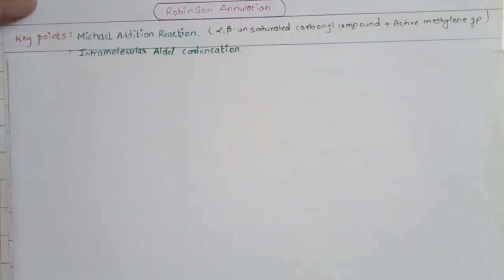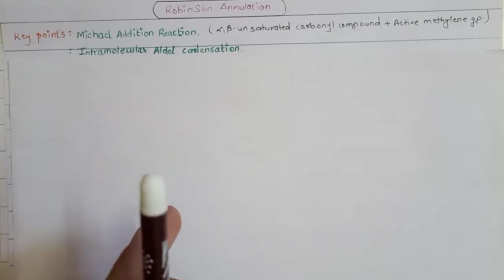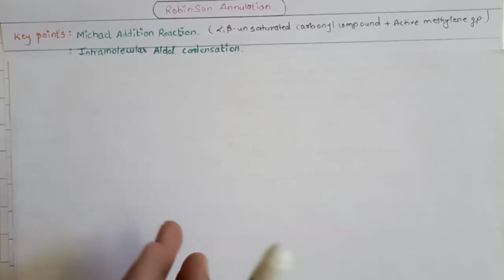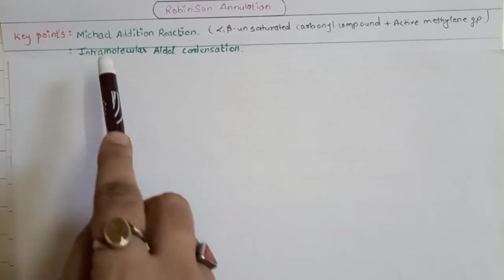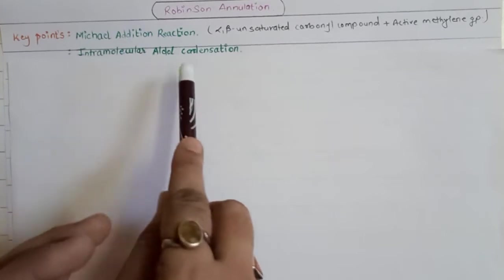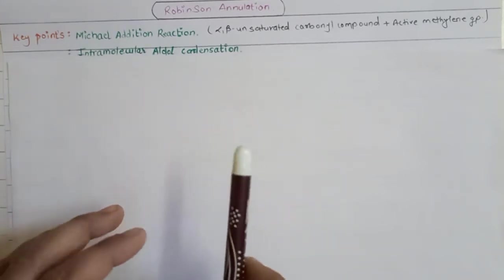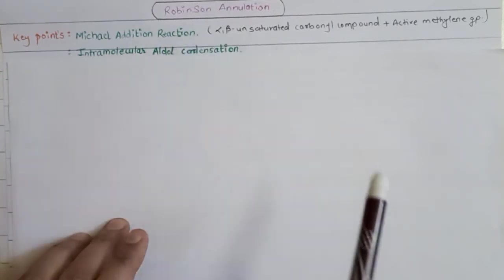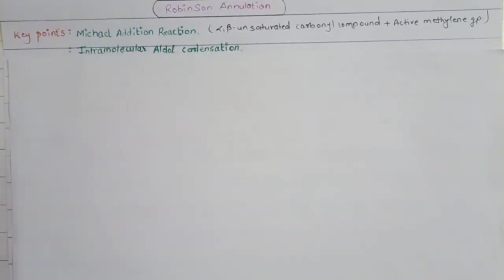When we study the Robinson annulation chemical reaction, we will study two chemical reactions - that is the major key point. To solve and understand the Robinson annulation reaction clearly, you should be completely aware of the Michael addition reaction and the intramolecular aldol condensation reaction, because with the help of these two reactions you will get the final product.